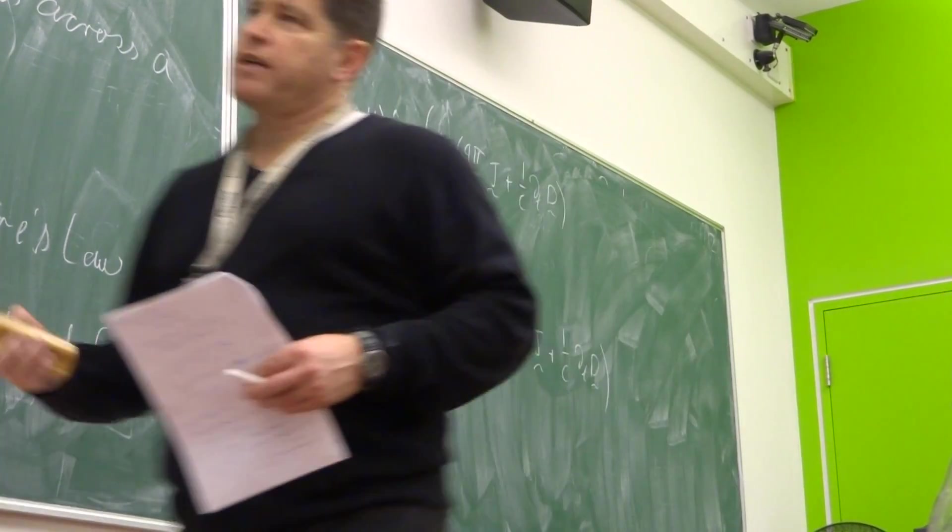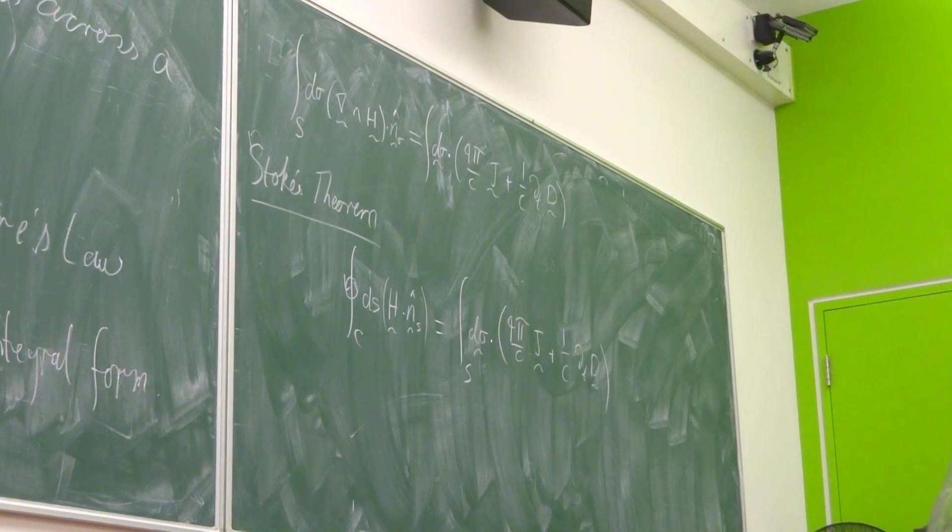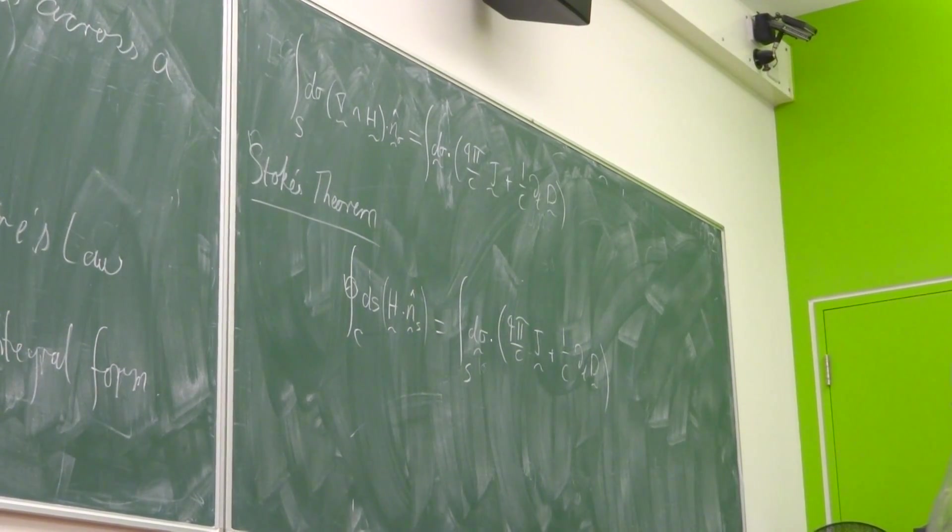So what we need to do in terms of Stokes' Theorem is to apply a loop. So there's our boundaries before.